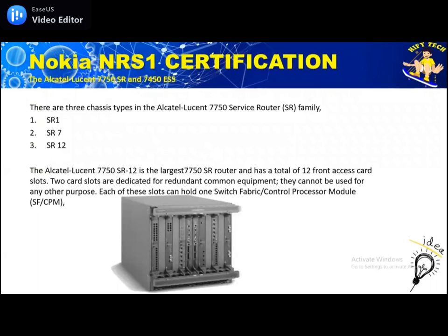Let's start with the Nokia 7750 series. Nokia has two series: 7750 and 7450. The 7750 SR has three chassis types: SR-1, SR-7, and SR-12. The chassis type refers to the number of cards which can be installed. SR-1 has only one card slot, and SR-12 has 12 slots. The picture below shows the SR-12.